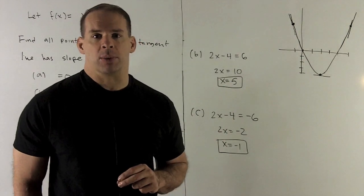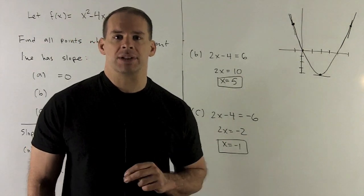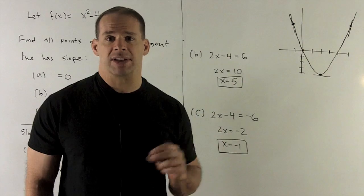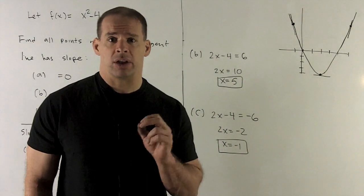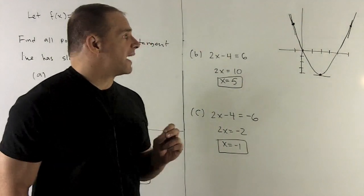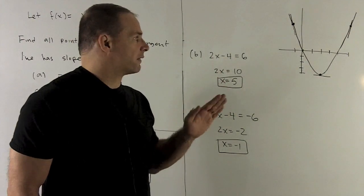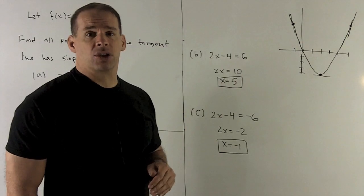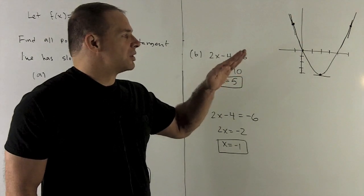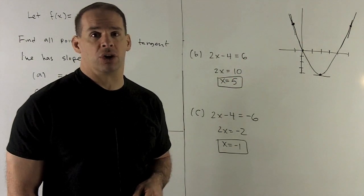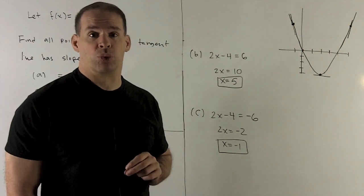Now let's try slope = 6. So 2x - 4 = 6 gives me x = 5. Let's take a look at that on the graph. At 5, you'll note we have a steep tangent line. This makes sense because if I have a 45-degree angle, that's slope = 1, and as we get steeper and steeper, our slope is getting larger and larger, so 6 is reasonable.